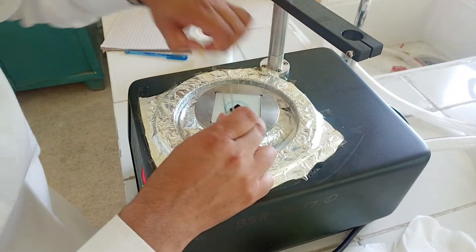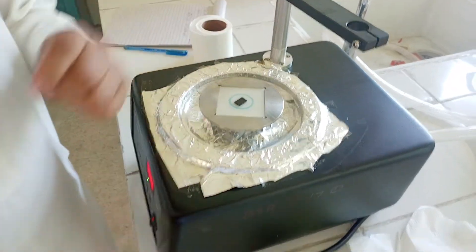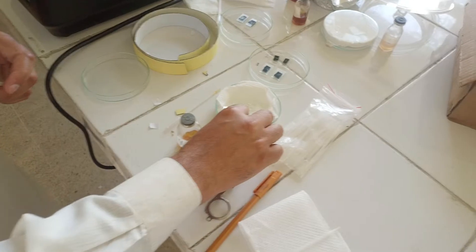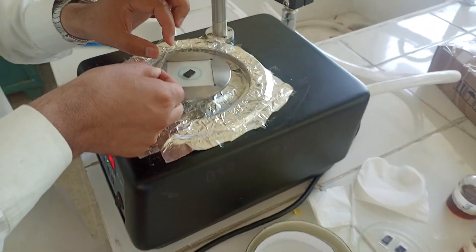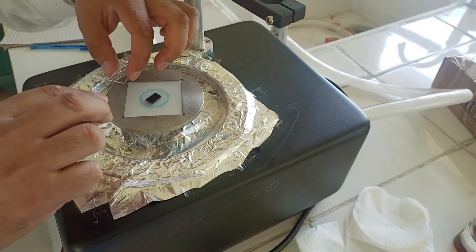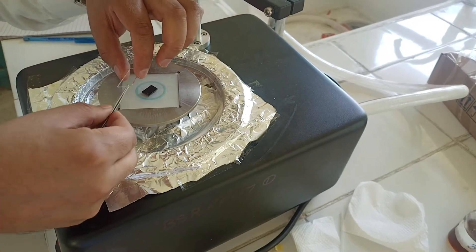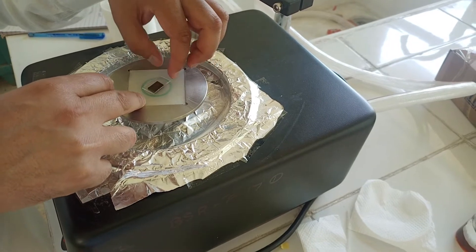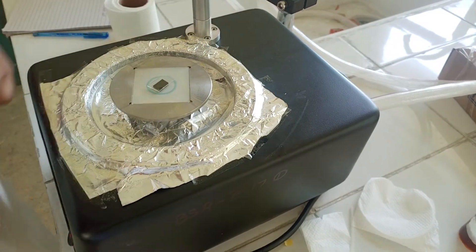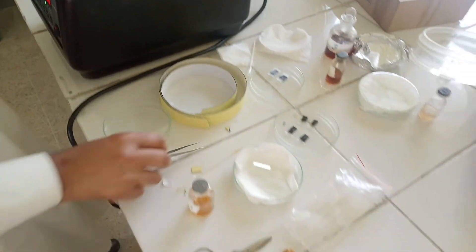Now we will take our slide and adjust our slide on it. We can use forceps by taking the side of the glass. Now we will cover it.